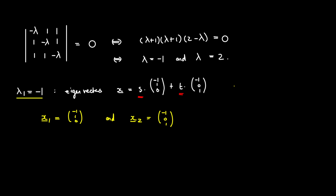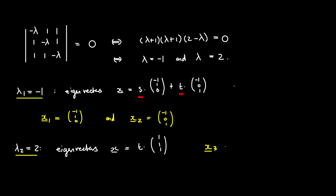We also have lambda₂ equal to 2 as the other eigenvalue. The eigenvectors corresponding to lambda₂ = 2 are all given by one free variable this time: t*(1, 1, 1). We need one eigenvector for this eigenvalue, so we choose x3 equal to (1, 1, 1) by taking t = 1.